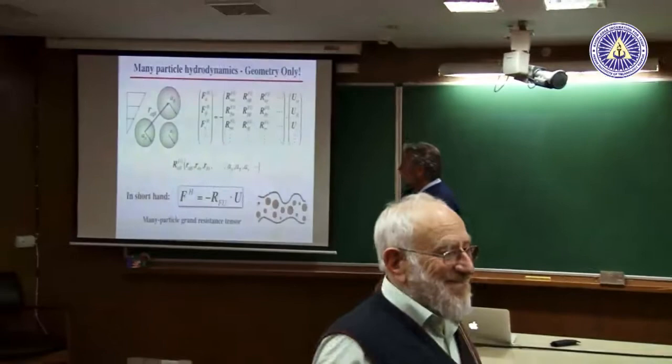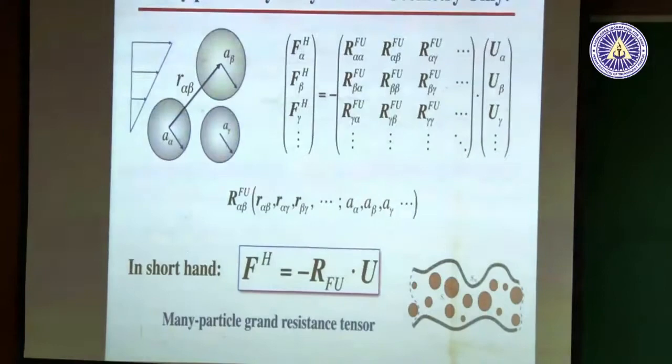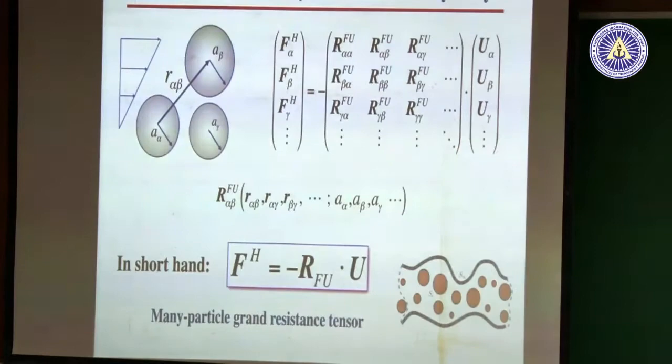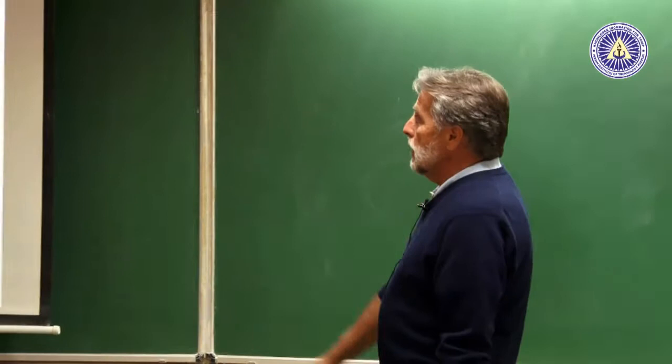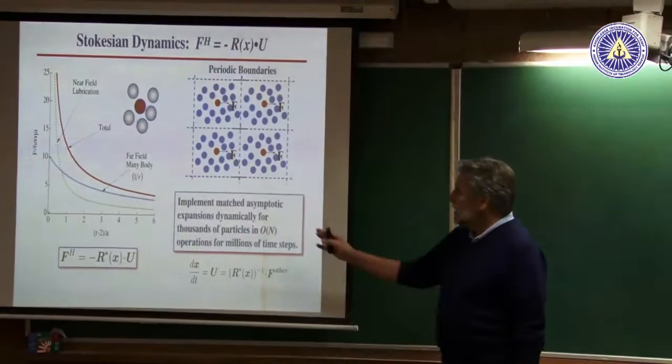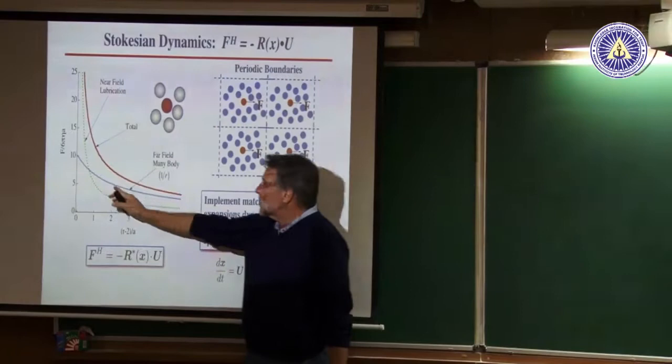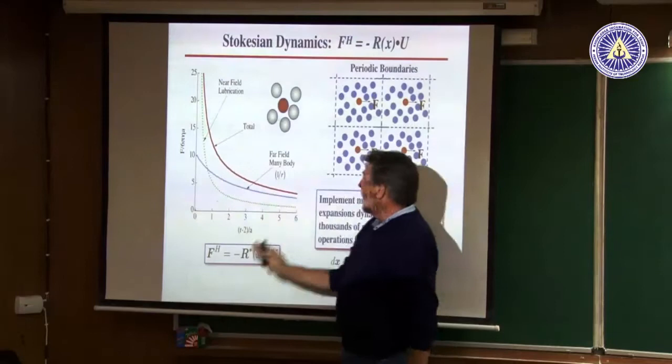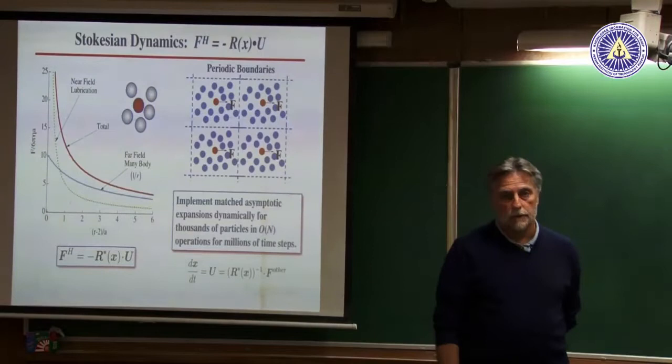You can do N particles — it's just geometry again. All the symbol R's are geometry. I haven't told you in detail how to compute all of those things, but just remember it's configuration dependent. The last thing we need to worry about is that interactions have both long-range parts, like one over R, short-range lubrication — a very strong repulsive force when particles are squeezed together. In periodic boundary conditions for simulations, you have to sum those up in a proper fashion.